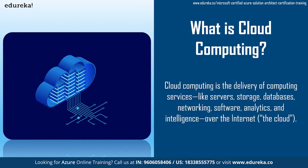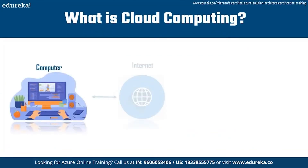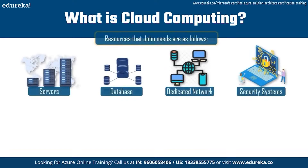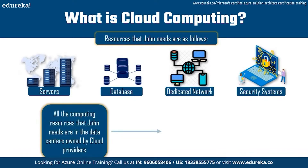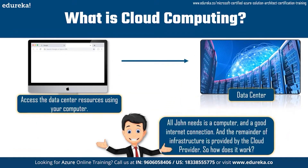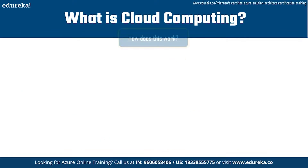John takes a computer connected to the internet and accesses the resources on a cloud platform. These resources are running on physical machines in data centers owned by cloud providers. All John needs is a computer connected to the internet — the remainder of the infrastructure is provided by the cloud provider, and he can access the resources he needs using the cloud platform.